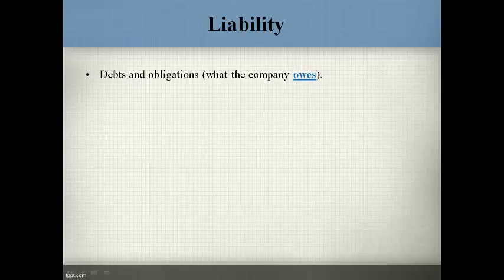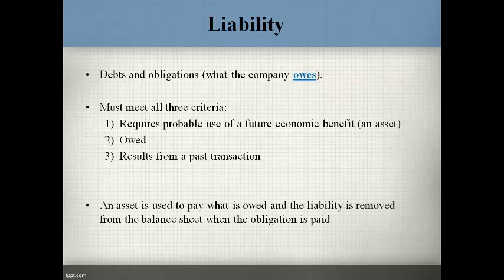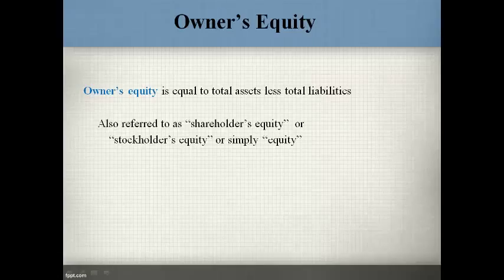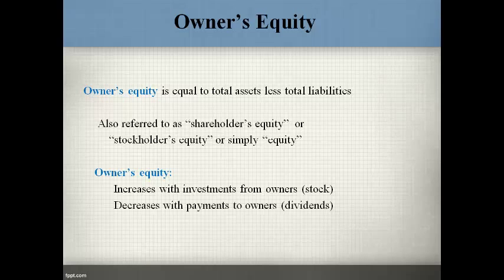A liability is a debt or an obligation that must be paid in the future. Three criteria must be met for a company to report a liability on the balance sheet: an asset must be used to pay the obligation, and it must be owed for an exchange of a past transaction. Stockholders' equity is the difference in total assets and total liabilities. Owner's equity increases when investors put capital into the company and decreases with payments back to owners, and increases or decreases with profits and losses.